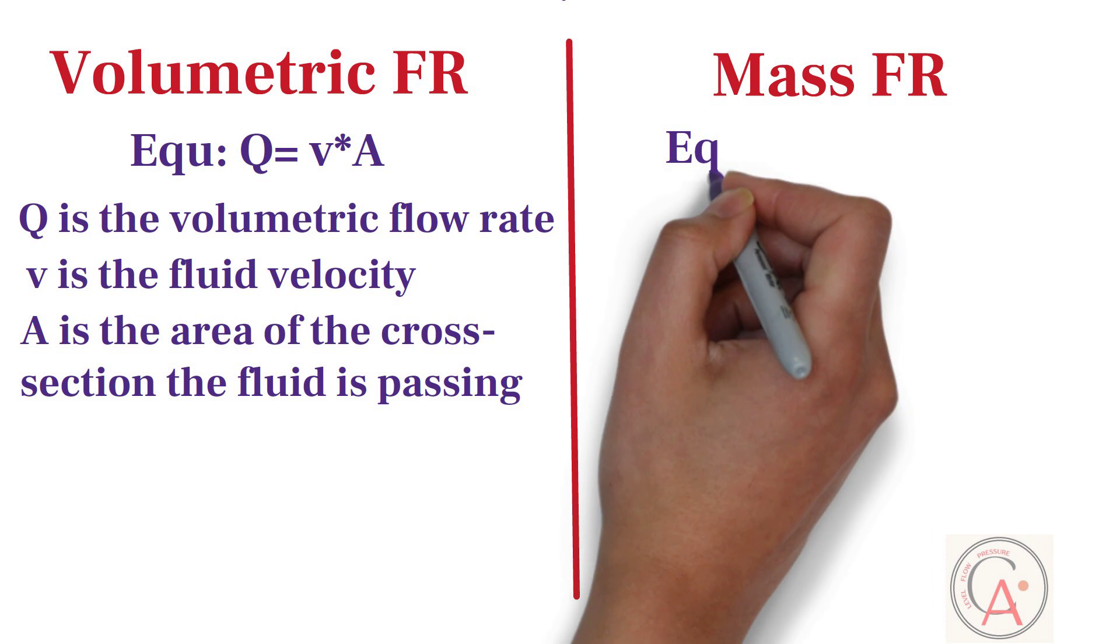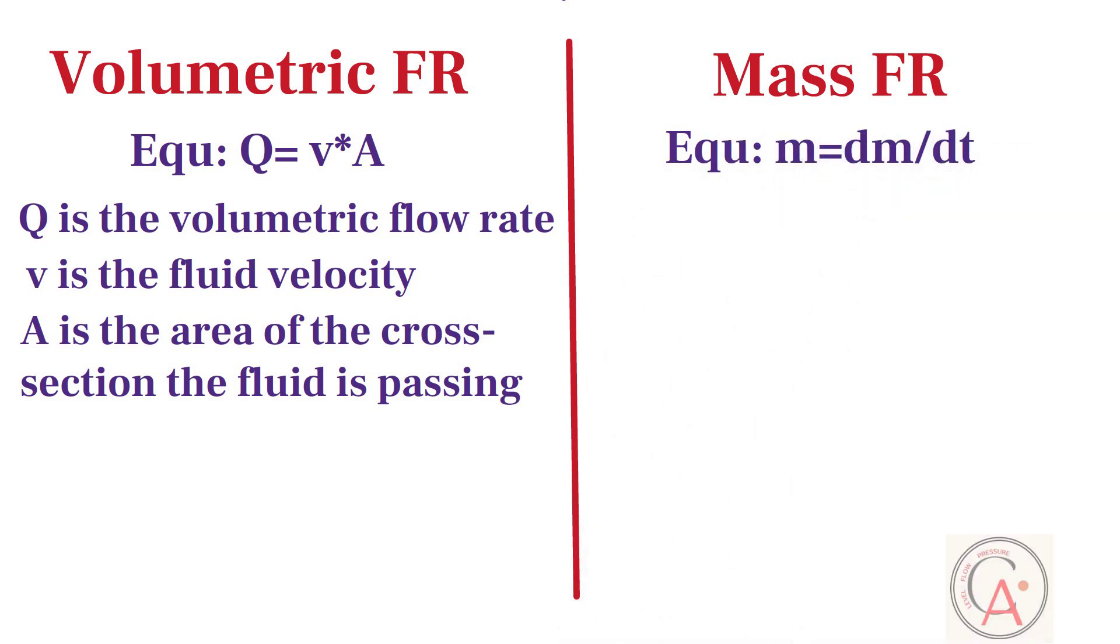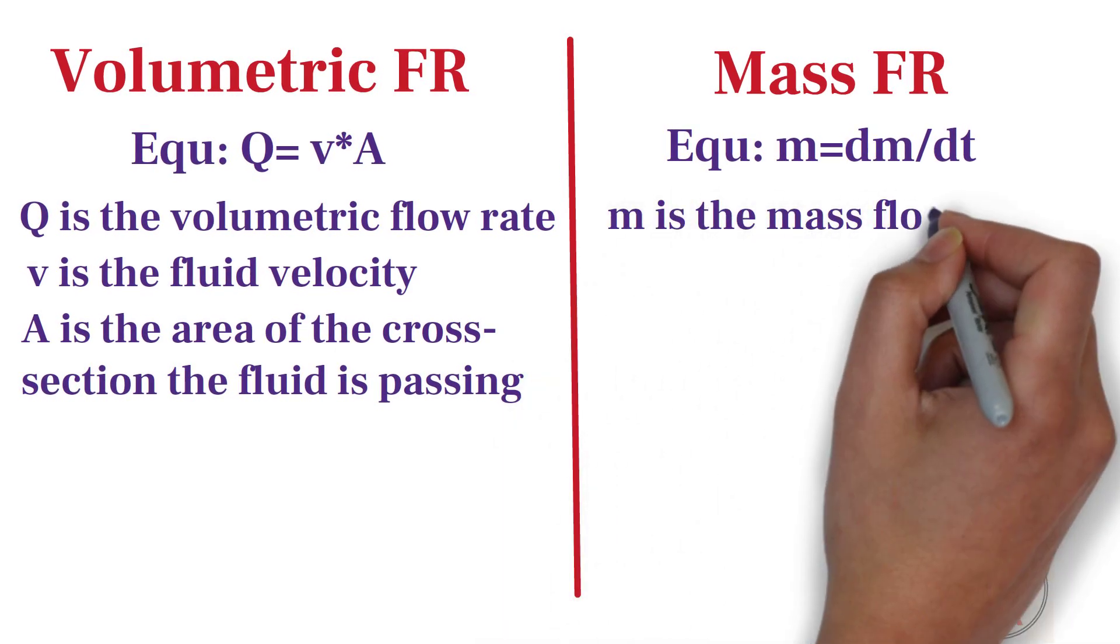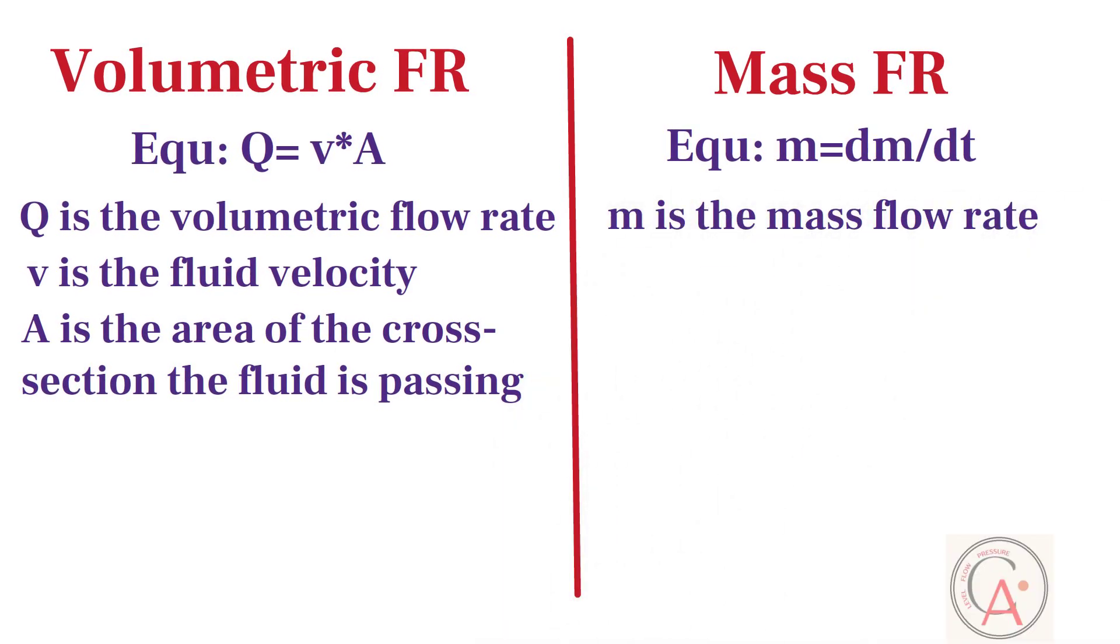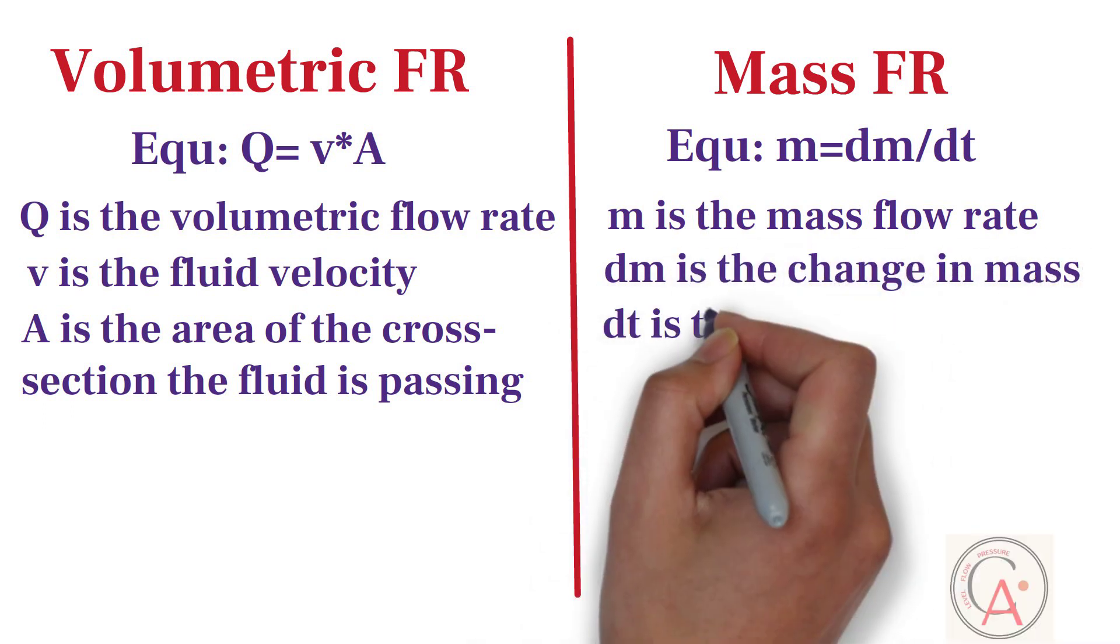On the other side, mass flow rate equation is the ratio of the change in a fluid's mass to the change in time. In this equation, m is the mass flow rate, dm is the change in the mass, dt is the change in the time.